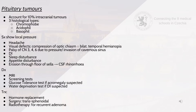Pituitary tumours account for 10% of intracranial tumours. There are three histological types: chromophobe, which is mostly non-secretory and can cause hypopituitarism — half produce prolactin, a few produce ACTH or GH, and they cause local pressure effects in about 30% of patients; acidophil, which secretes prolactin or GH with local pressure effects in 10%; and basophil, which secretes ACTH.